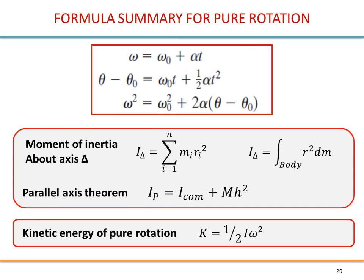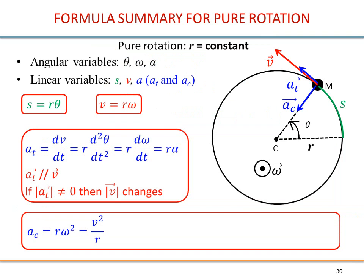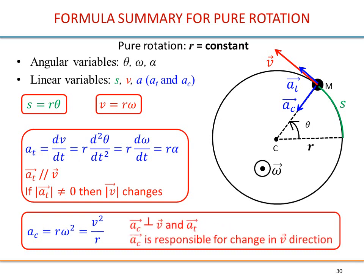To conclude, we have a formula summary for pure rotation. These are the formulas for kinematics, we have the moment of inertia and the parallel axis theorem, kinetic energy of pure rotation, and the other formulas — a summary of the angular variables, linear variables, and how they are related: three basic equations for the distance, the velocity, and the acceleration.